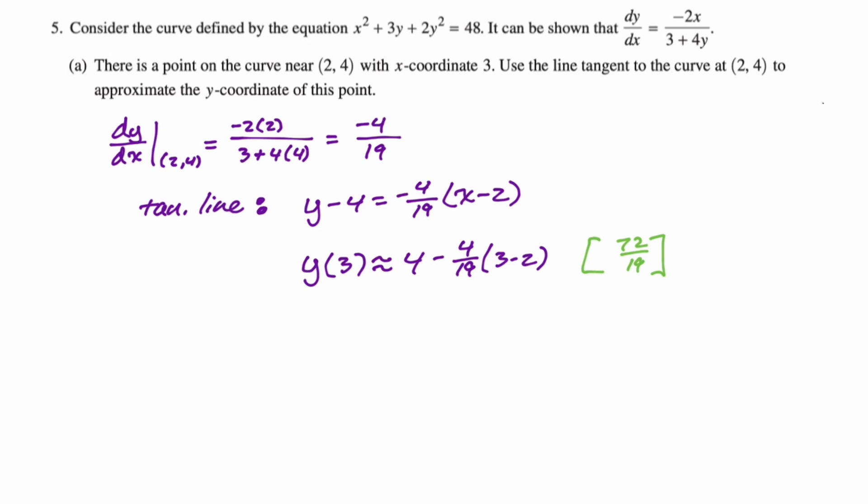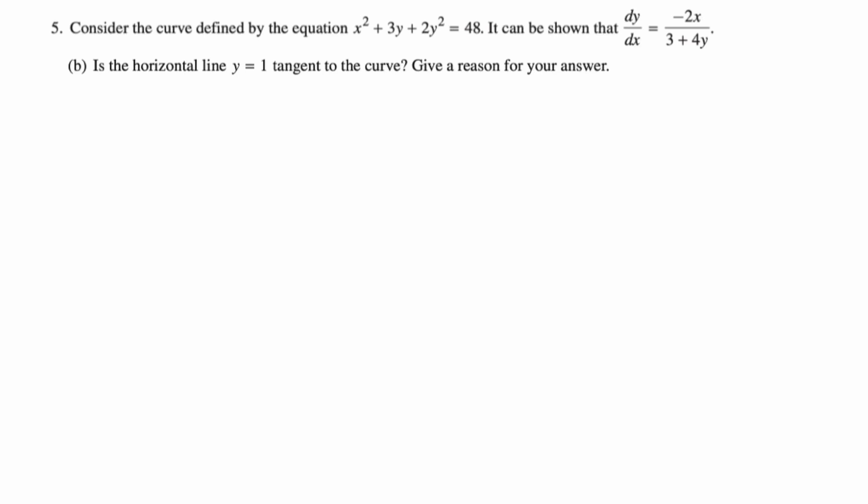One time I made a mistake and got a little bit roasted for it. So 72 over 19 but leave it as 4 minus 4 over 19 quantity 3 minus 2. You could just leave it like that. All right, let's take a look at the next one. Is the horizontal line y equals 1 tangent to the curve? Give a reason for your answer.